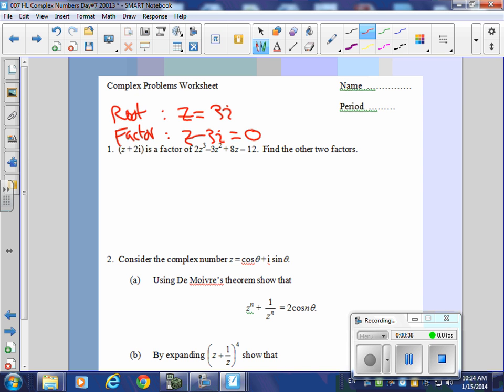So in this case, I have this thing called z plus 2i. z plus 2i equal to 0. It is a factor. So what would the root be? z equals negative 2i, right? That's the... You just solve for z. So there's your root.